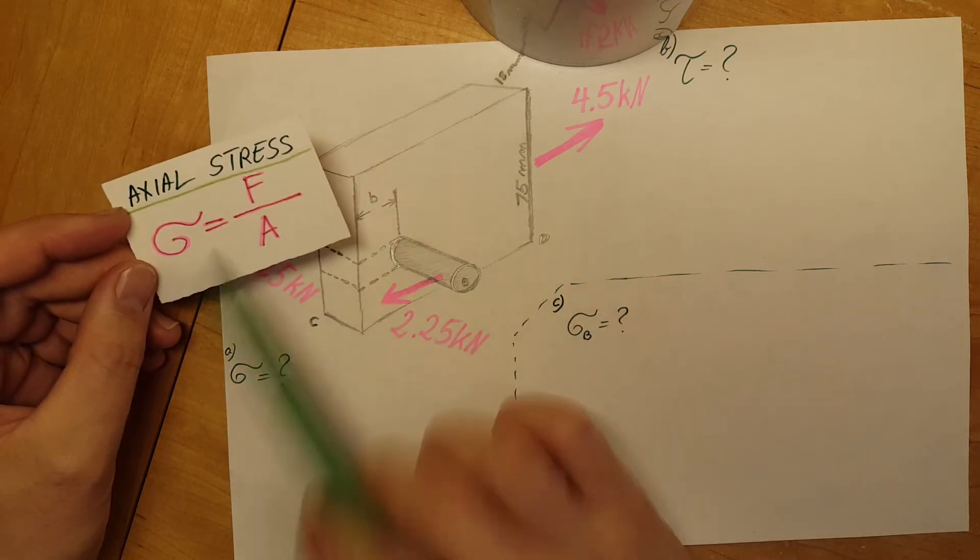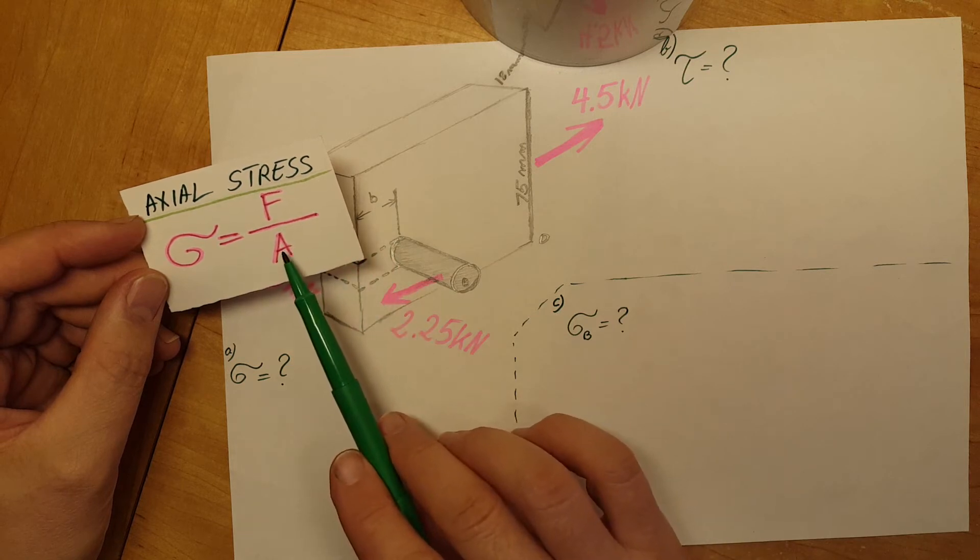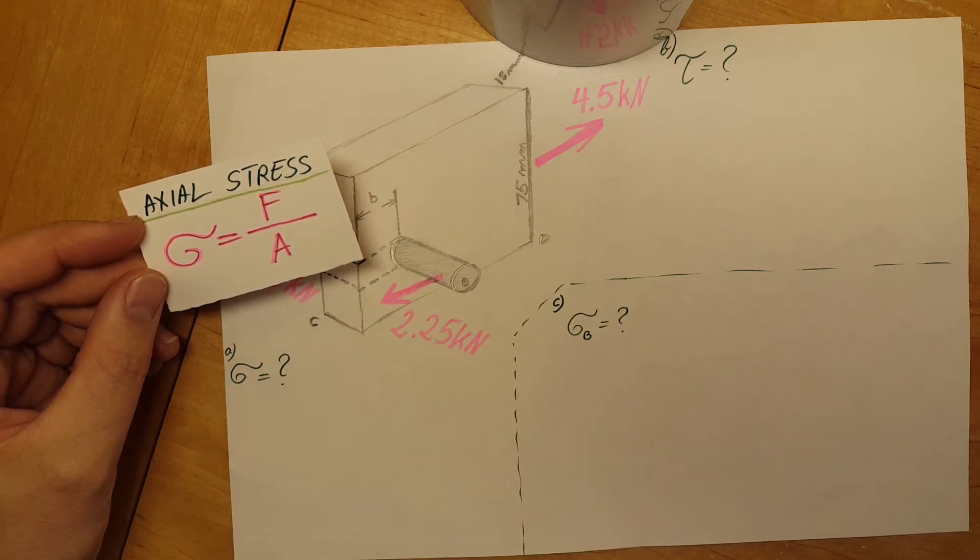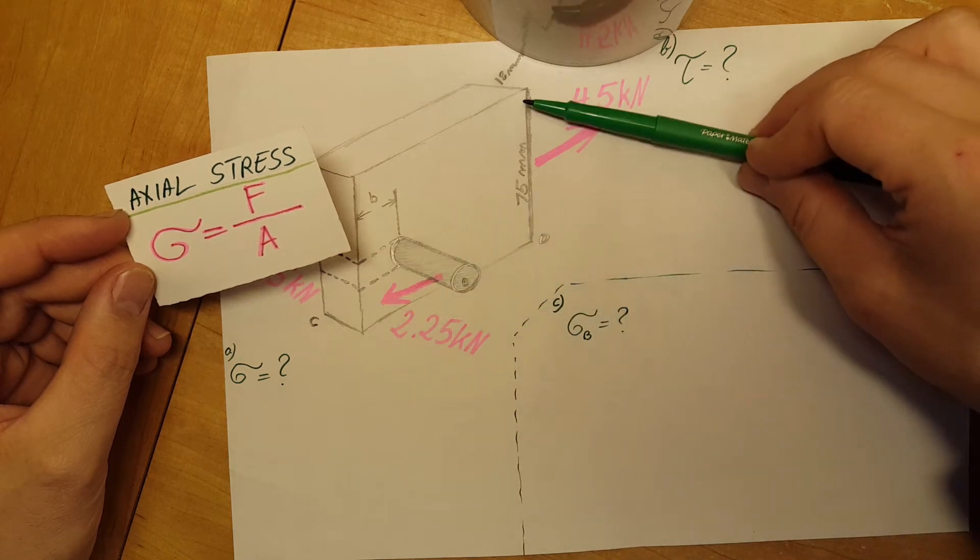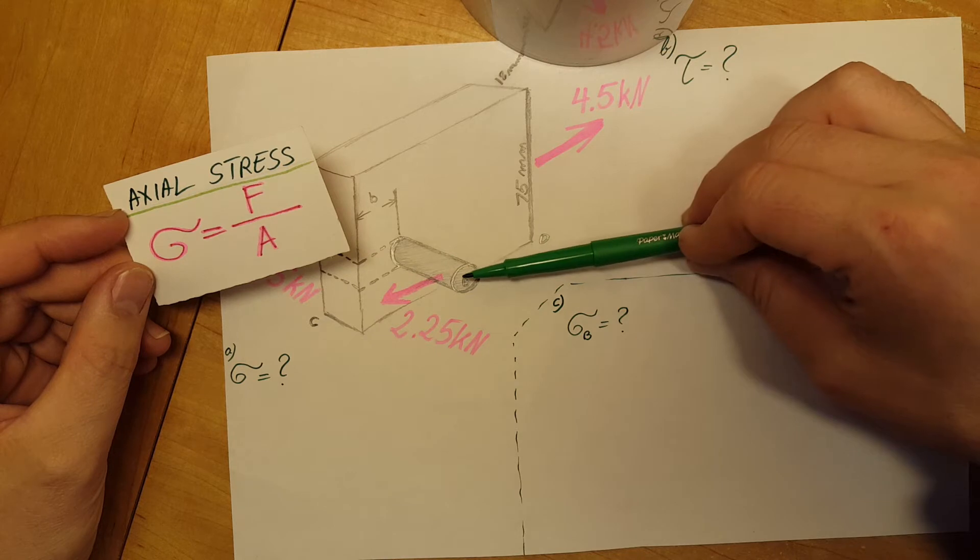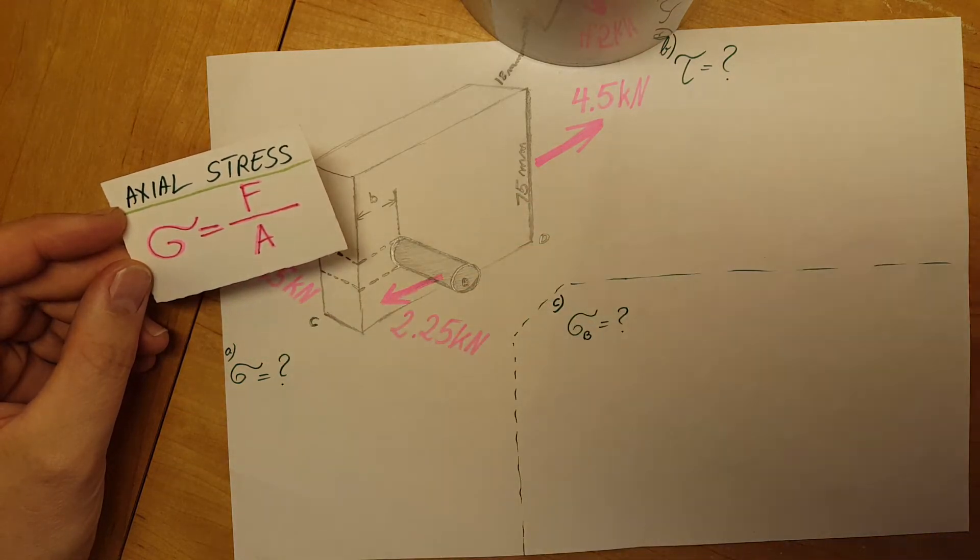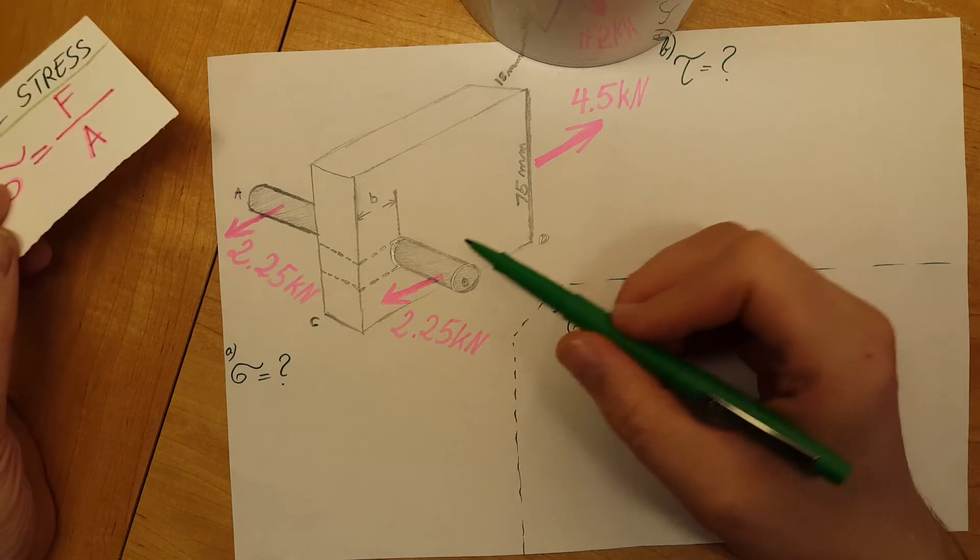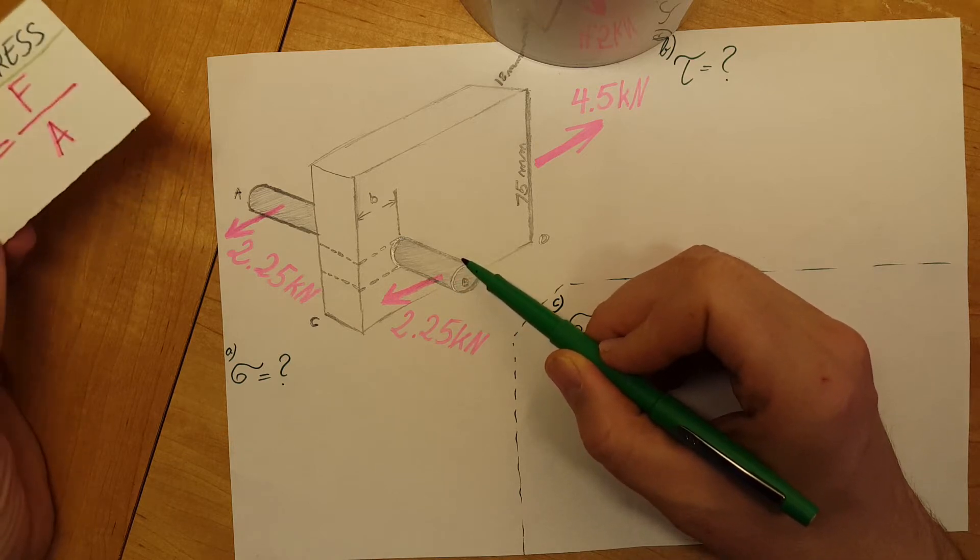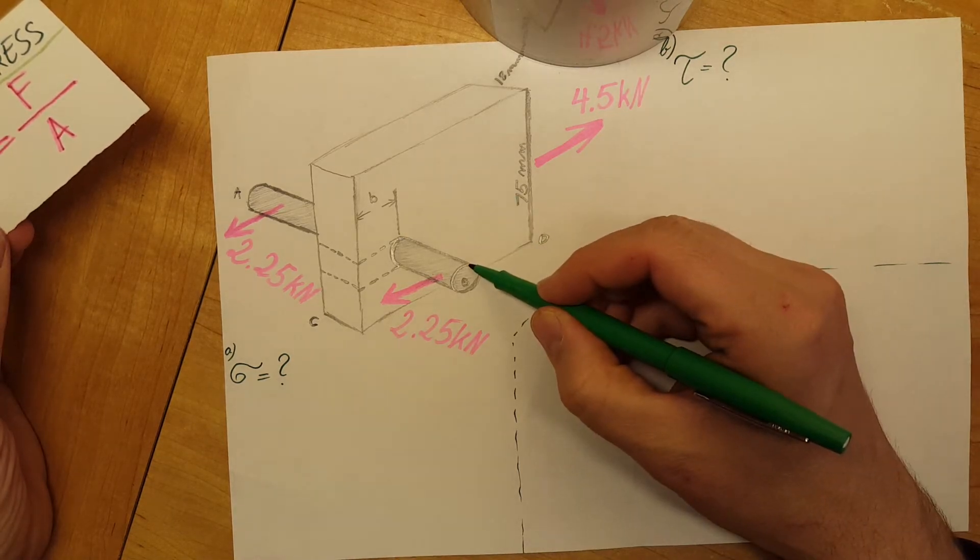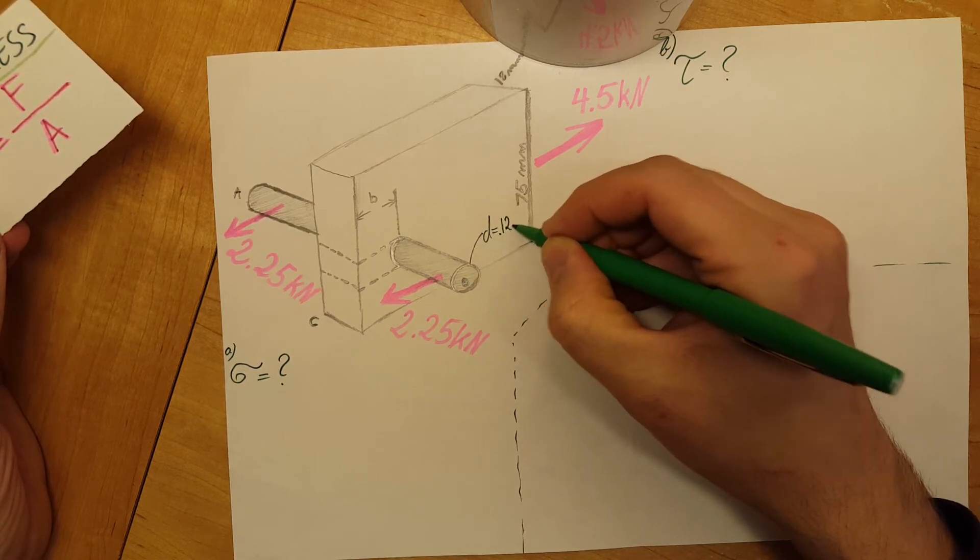To get started we're going to work on the axial stress or the average normal stress in the wood, and this is the formula that we're going to use for it. We have the force given, we have to calculate the area though. Before we get started, I think there's a typo in the book - it says the diameter of the steel rod is 0.12 millimeters. I think what they mean is 0.12 meters, so the diameter equals 0.12 meters.